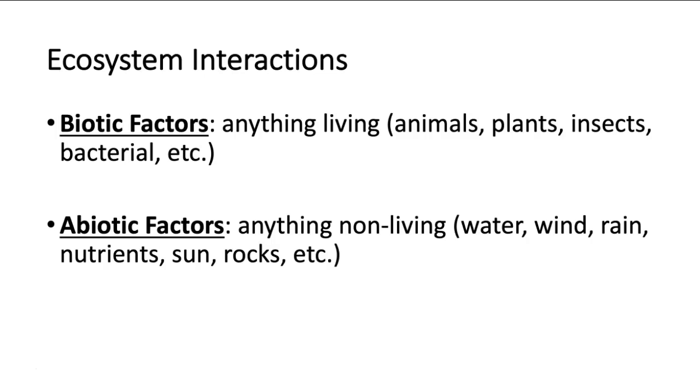Abiotic factors include things like nutrients, water, wind, and rain — all of these would be influencing the interactions within that ecosystem. Biotic factors, on the other hand, refer to anything living, including how animals and plants interact with things like wind, water, rain, temperature, or the climate of a particular location.